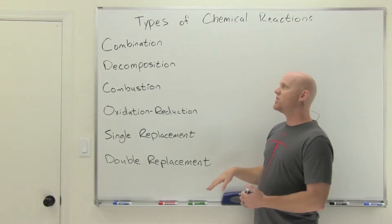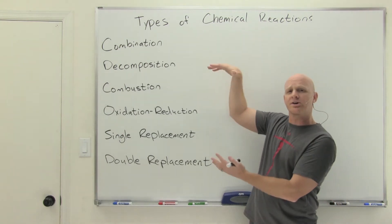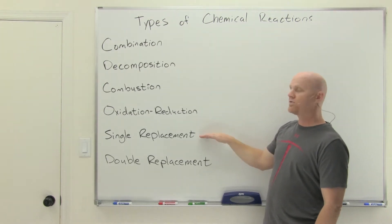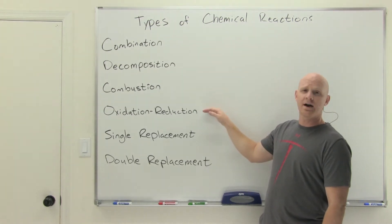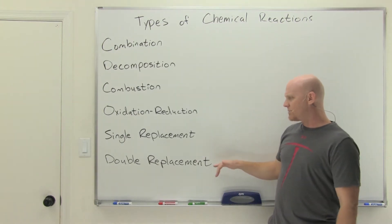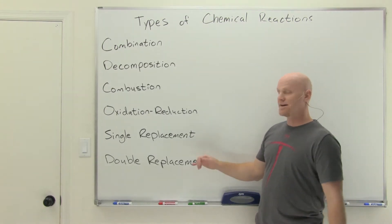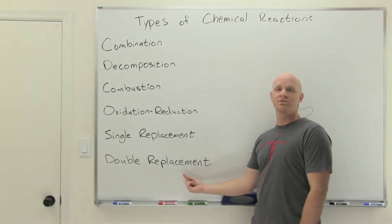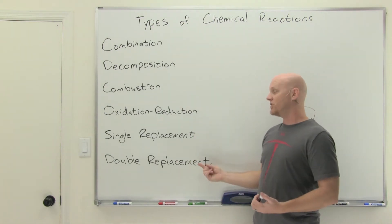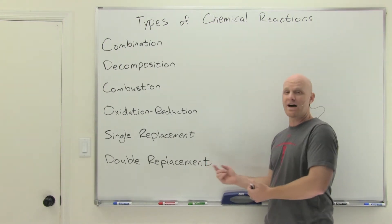Now one thing to note: these are not mutually exclusive. Oxidation-reduction reactions are a broader class — all combustion reactions are a type of redox reaction, and all single replacement reactions are also a type of redox reaction. Under double replacement, we'll do a whole lesson at the end of this chapter, and certain types like precipitation reactions are a more specific type of double replacement reaction.